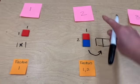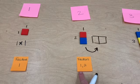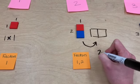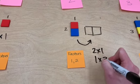So all the factors that we can make for the number 2 are 1 and 2, whether it's 2 times 1 or 1 times 2.